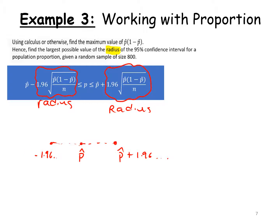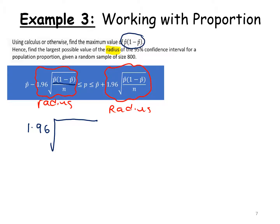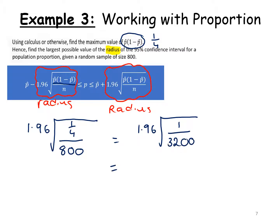Now that we know what radius means, let's answer the question. The largest possible radius requires the largest possible value of p-hat times (1 minus p-hat). From the previous part, we found that maximum value is one quarter. So the radius is 1.96 times the square root of one quarter over 800, which equals 1.96 times the square root of 1 over 3200. Putting that into the calculator gives 0.03464, which is 3.464%. A simple question, as long as you understood what was meant by the term radius.